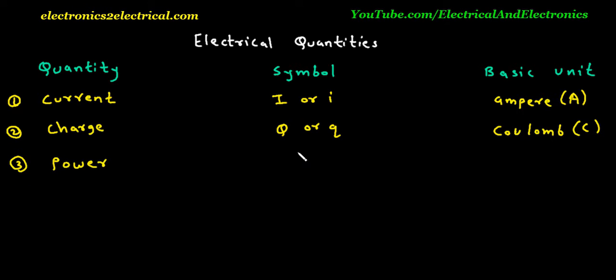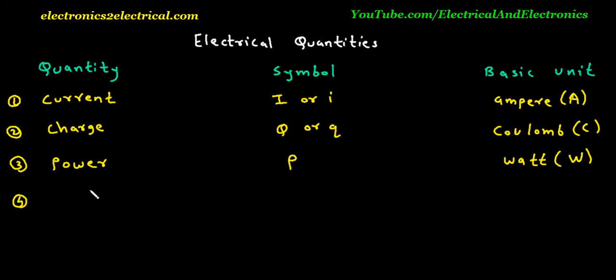Quantity: Power. Symbol: capital P. Basic Unit is Watt, denoted by capital W.